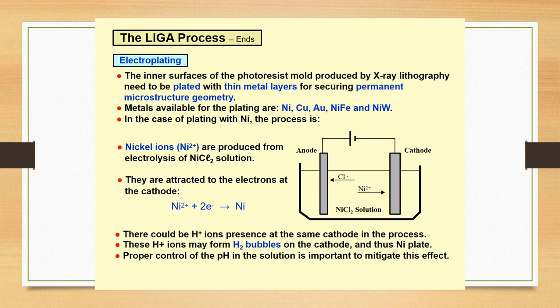In the form of plating with nickel, the process is: nickel ions are produced from the electrolysis of nickel chloride solution, and they are attracted to the electrons at the cathode. For example, Ni²⁺ plus 2 electrons form nickel. There could also be H⁺ ions present at the same cathode in the process. These H⁺ ions may form H₂ bubbles on the cathode and thus the nickel plate. Proper control of the pH in the solution is important to mitigate this.